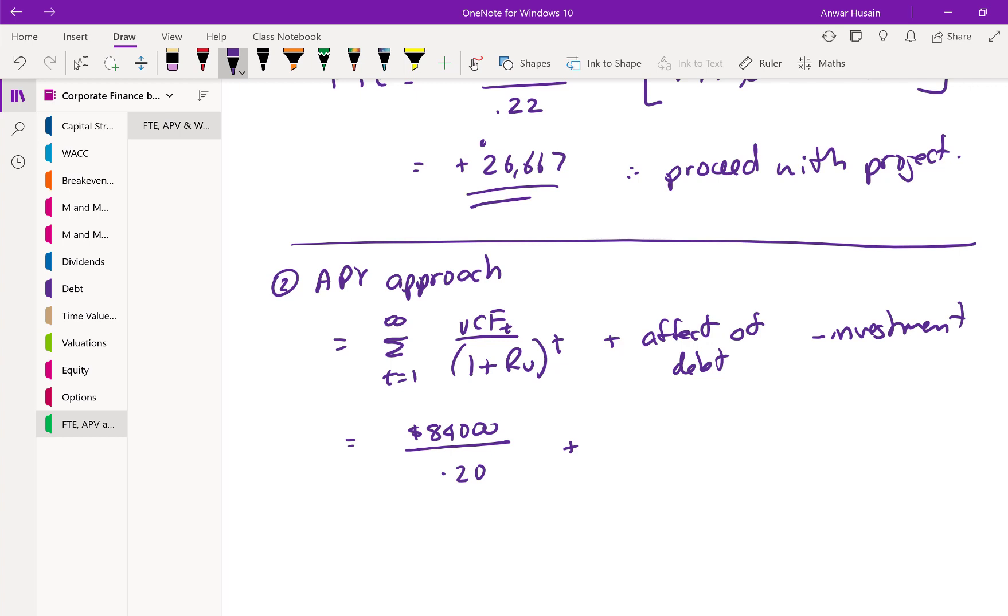Now, what are the effects of debt? The effects of debt is the tax shield. So it's going to be, I'll write this up here. This is tax shield, and this is equal to debt times the tax rate. Okay, so the debt is 116,667, and the tax rate is 40%. And then the investment was given as 440,000.